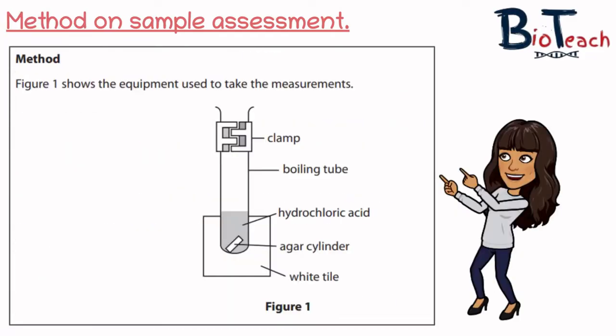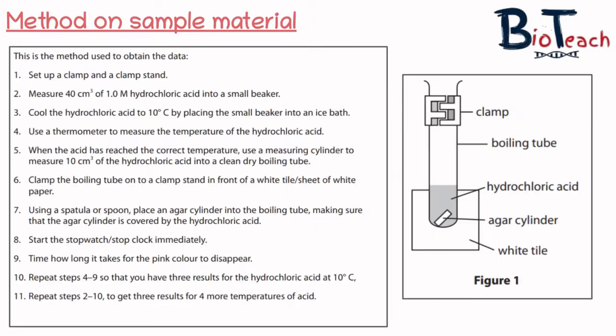The task brief also gives you the setup of the apparatus: the agar cylinder, the amount of hydrochloric acid needed to cover it, and a white tile at the back to help you see when a colour change has taken place. You can just look at that and understand how the apparatus is going to be set up. The next part then gives you the method — this shows how the experiment would have been carried out. Feel free to pause the video to have a read so that you can understand what needs to be done.